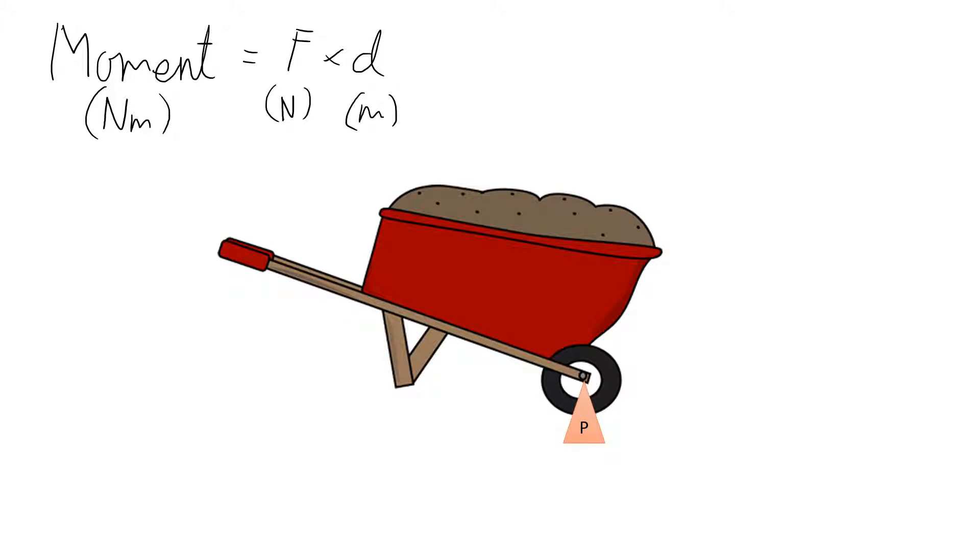So in this example, we've got a wheelbarrow. And the first thing you've got to do is identify the point of rotation, which is the pivot point. So here, that's going to be the wheel, the point around which everything else rotates.